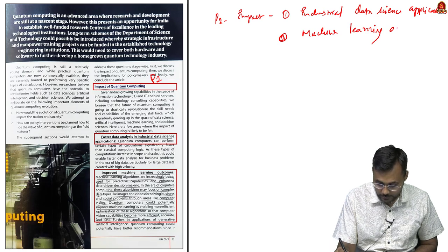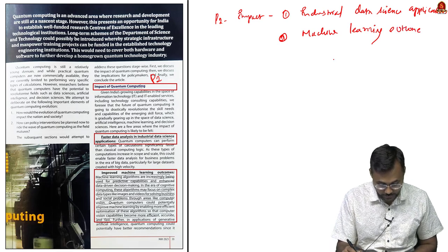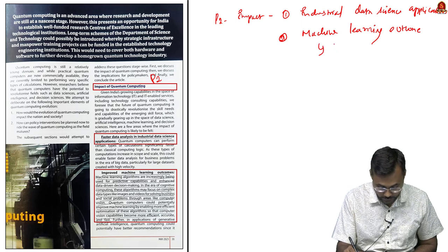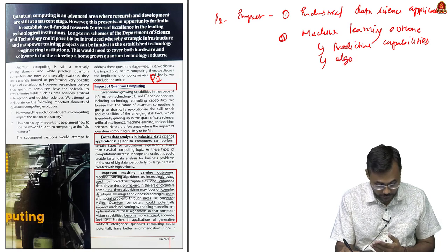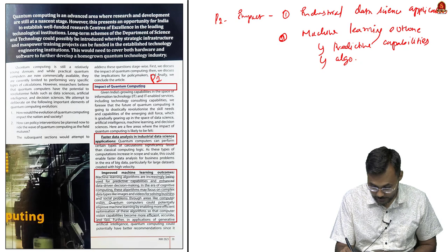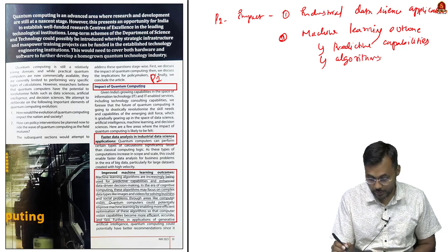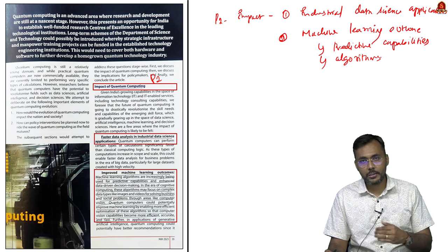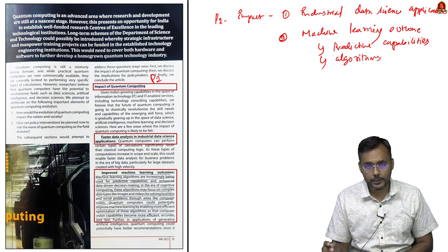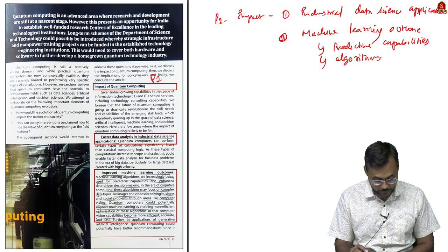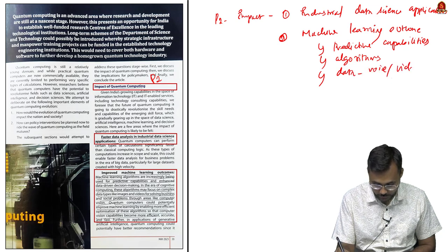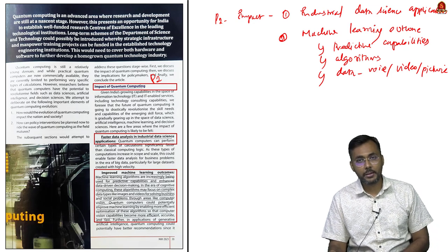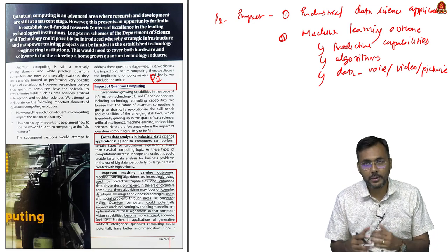Quantum computing can help machine learning a lot. Machine learning, which is based on algorithms, is moving towards predictive capabilities — predicting near or future events. Quantum computing can combine data from voice, video, and pictures to predict future events, for example identifying security threats from individuals entering a country.